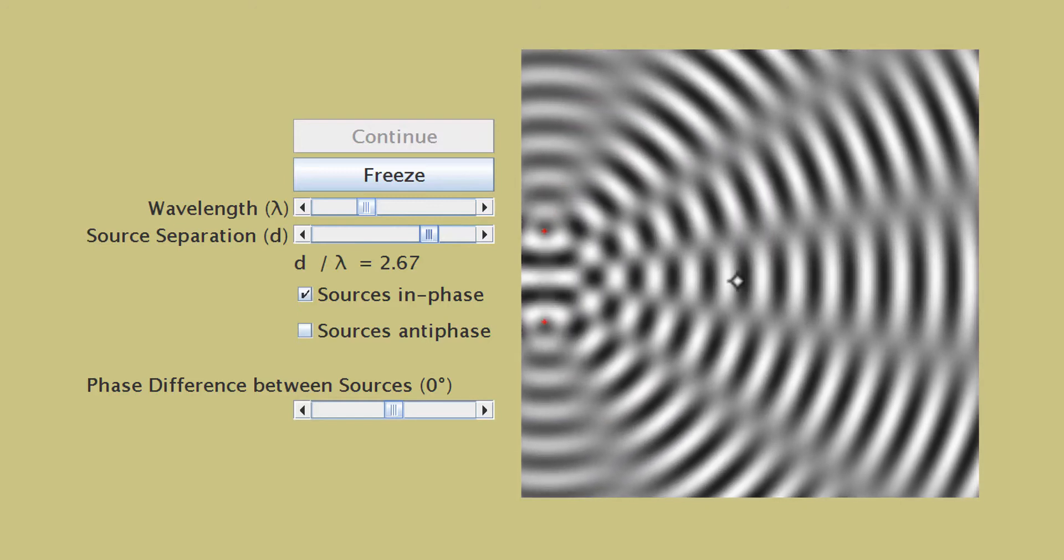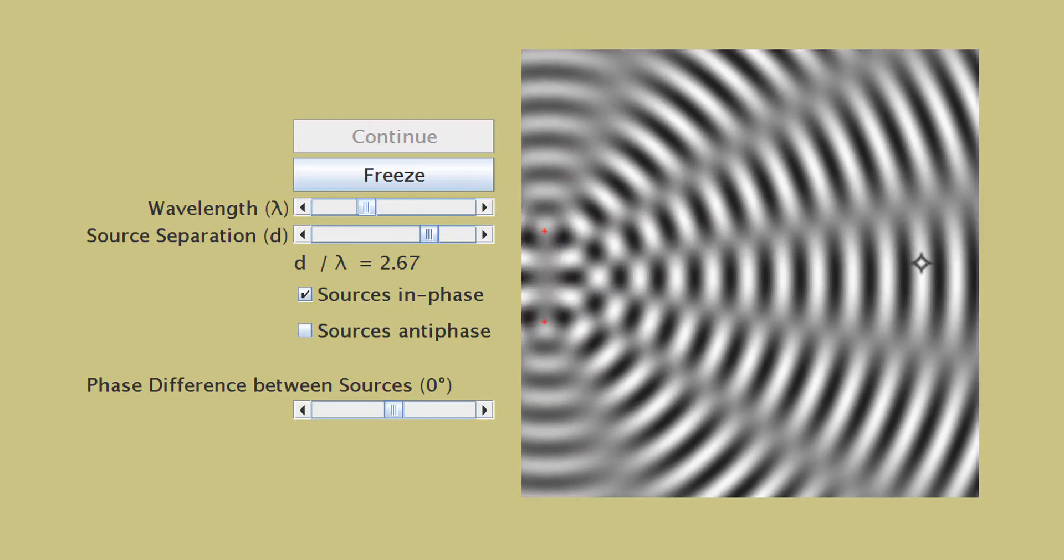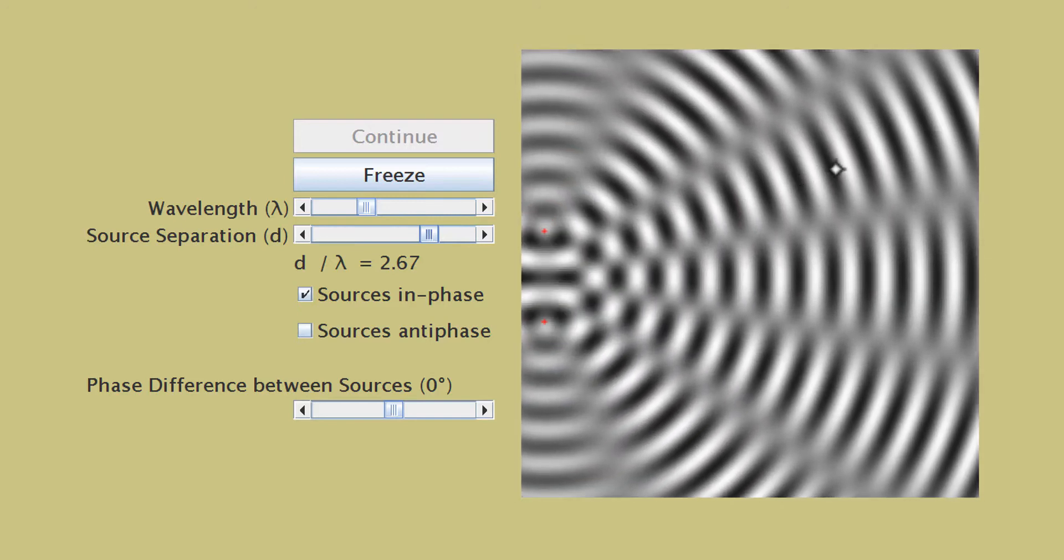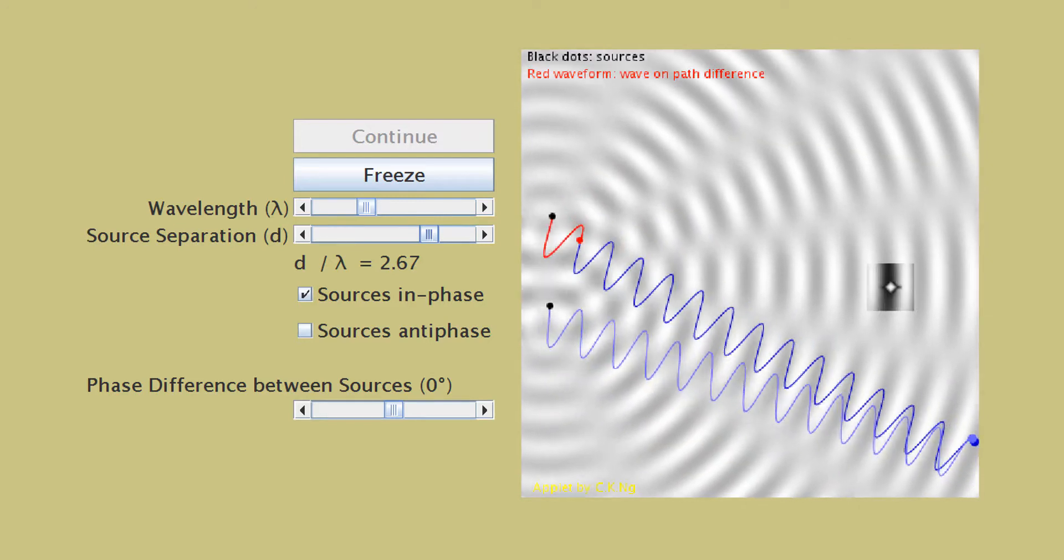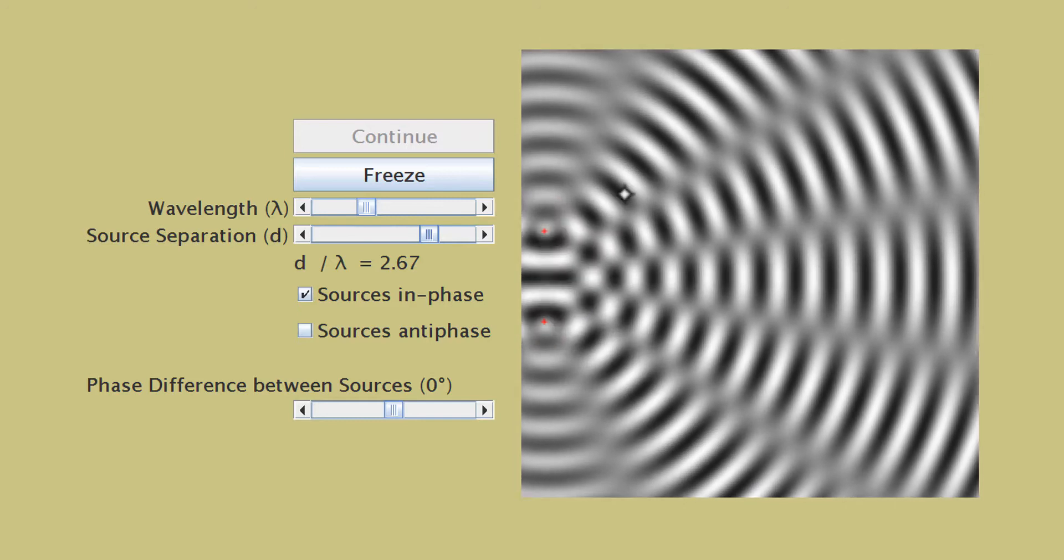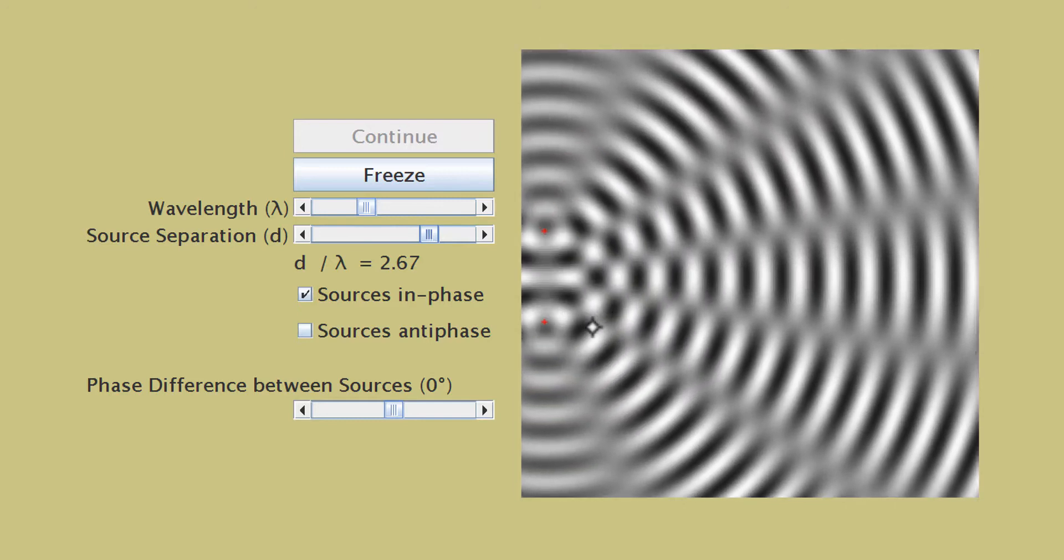This is the zeroth order antinode line. The first order antinode lines will be this one and this one. The second order antinode line will be this one and this one.